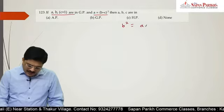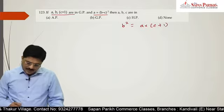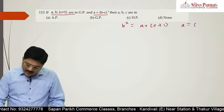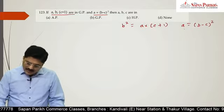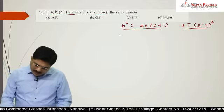b² is equal to a into c plus 1, okay. Or a value given, b is equal to... sorry, a is equal to b minus c the whole square. This is given, this we found.